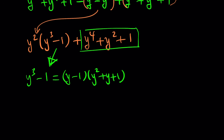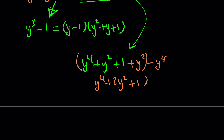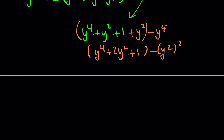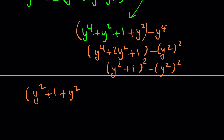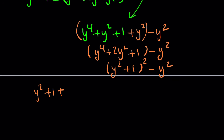This expression can be turned into a perfect square by adding y squared and subtracting it. This makes it y to the fourth plus two y squared plus one, which is y squared plus one quantity squared. So we have y squared plus one quantity squared minus y squared — that's a difference of two squares — which factors into y squared plus one plus y, times y squared plus one minus y.